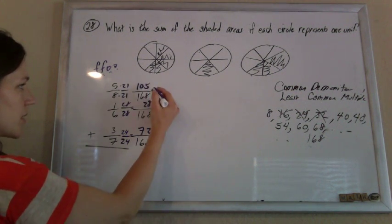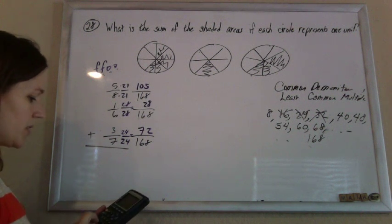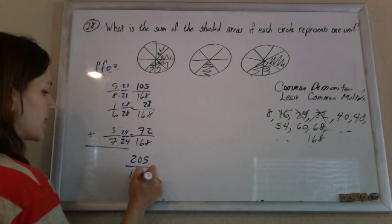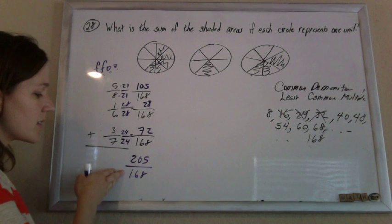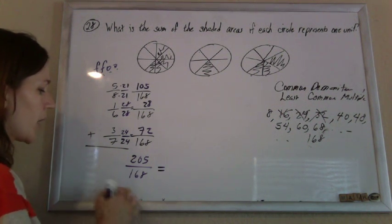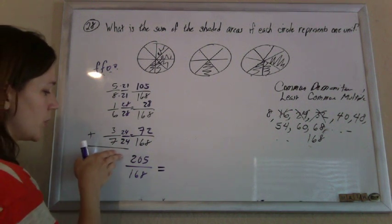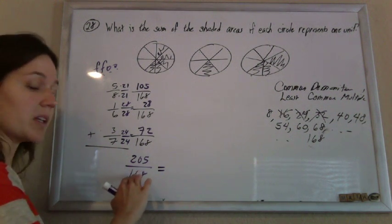Now that they all have like denominators, I can add the numerators. 105 plus 28 plus 72 is 205 out of 168. And you look at your answers, and of course it's not there, because this is an improper fraction, and they want it written as a mixed number. Fractions are always division problems. 205 is being divided by 168. That fraction bar means divide.